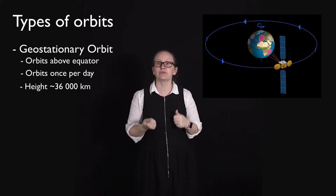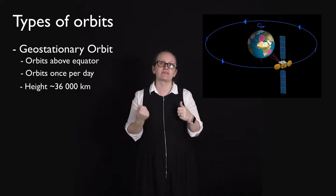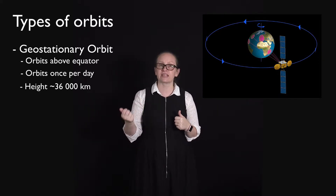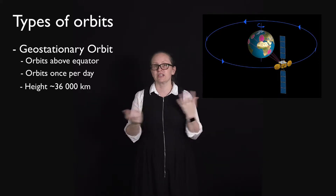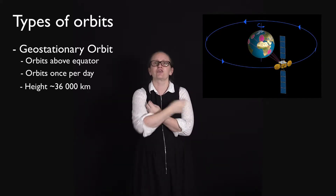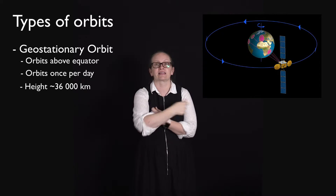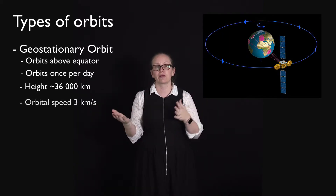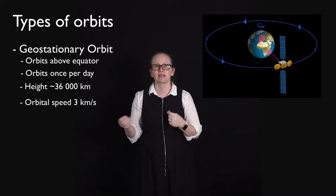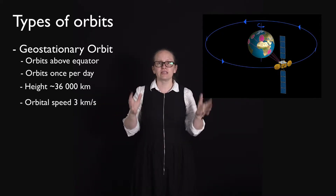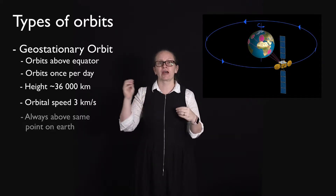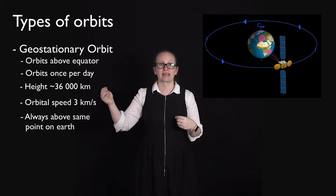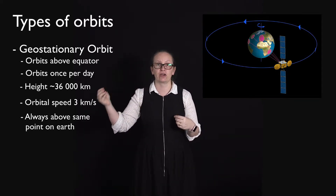The orbit takes exactly 23 hours 56 minutes and 4 seconds, which is exactly one day. In this orbit the satellite is travelling at 3 kilometers per second. This is useful when you want to have your satellite always above the same point on the earth.